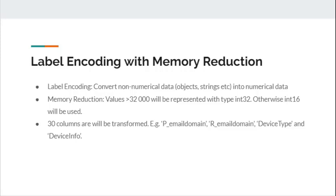The first feature engineering technique performed is label encoding with memory reduction. Label encoding converts non-numerical data — such as objects and strings — into numerical data that the model can understand. After label encoding, we also perform memory reduction: numerical values greater than 32,000 are represented with type INT32 (4 bytes), otherwise INT16 (2 bytes) is used. We found that 30 columns are label encoded, including p-email domain, device type, and device info.